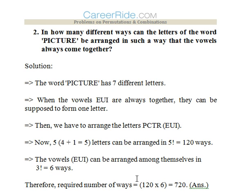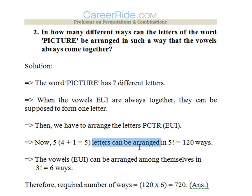Second question: In how many ways can the letters of the word PICTURE be arranged such that the vowels always come together? PICTURE has seven different letters and the vowels E, U, and I should always be together. So we will assume E, U, I to be a single letter. The total number of letters would then be 5, and these 5 letters can be arranged in 5 factorial ways, that is 120 ways.